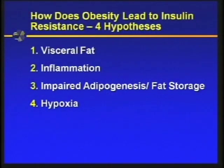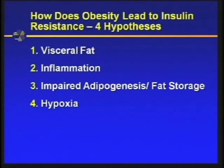We're trying to understand how garden variety obesity can lead to insulin resistance and all the metabolic perturbations. There are four leading hypotheses in this research community: one is that visceral fat is causing insulin resistance; the second is inflammation, perhaps mediated via the immune system; the third is impaired adipogenesis and fat storage; and the fourth is hypoxia. It's very likely these things are interrelated, but for the sake of time I'm going to focus on impaired adipogenesis and fat storage.